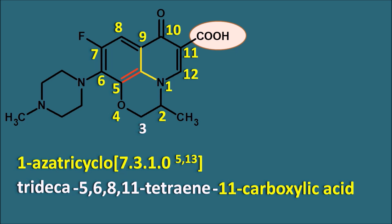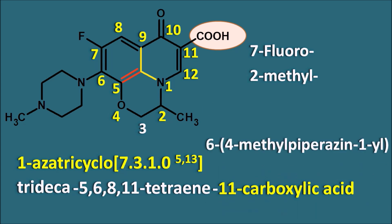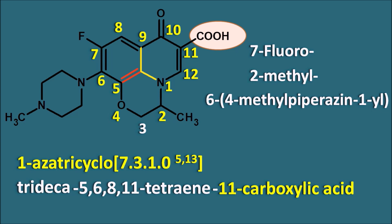The next step is to indicate the side chains and arrange them in alphabetical order. At position 7, fluorine is present — so '7-fluoro.' At position 2, a methyl group is present — '2-methyl.' At position 6, a piperazine ring is present with a methyl group at the fourth position — '6-(4-methylpiperazin-1-yl).' At position 10, a ketone group is present — '10-oxo.' Within the ring system, another heteroatom, oxygen, is present at position 4 — indicated as '4-oxa.'